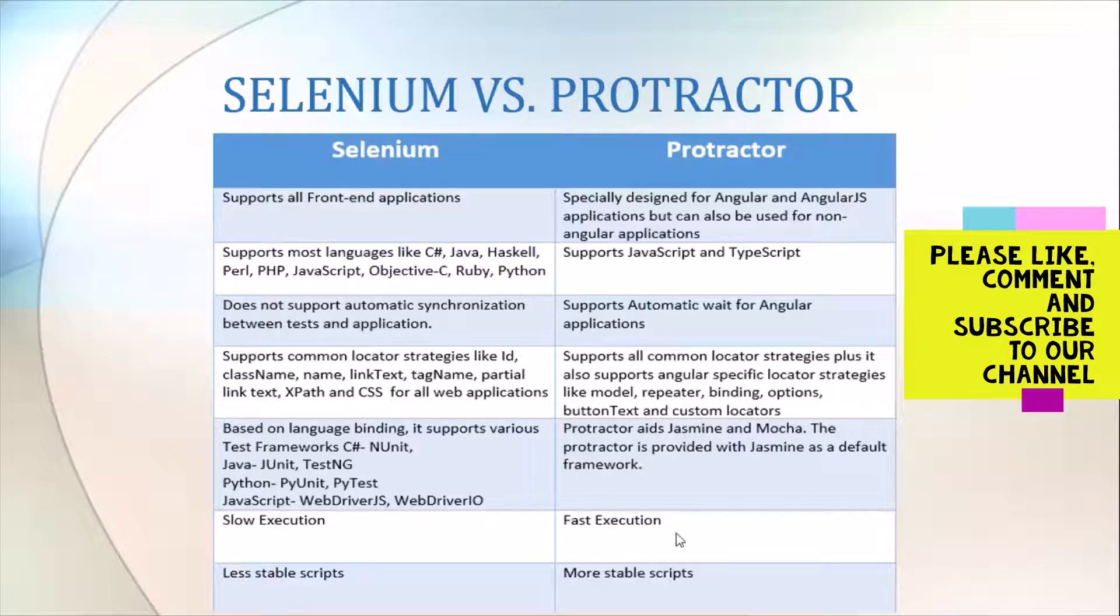The other major difference is that Selenium's execution is sometimes slower depending on the application you're working with. But Protractor is very fast compared to Selenium. Protractor scripts run really fast.